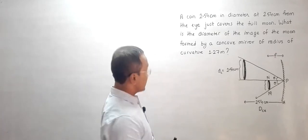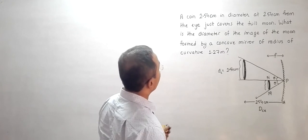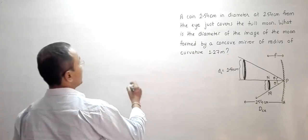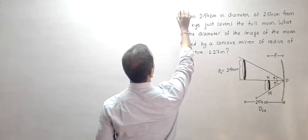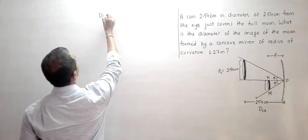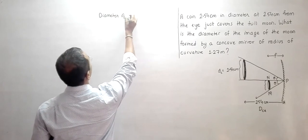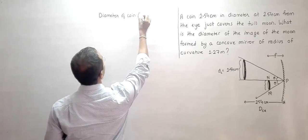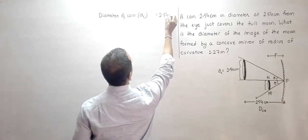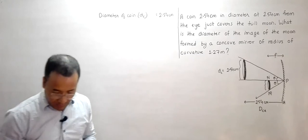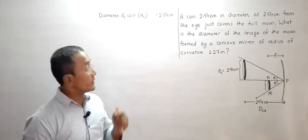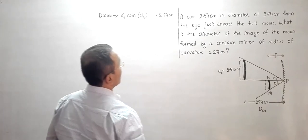Today's question involves a coin whose diameter is 2.54 centimeters. We write this as DC = 2.54 cm. It is actually one inch — in old books it was given as one inch, and once the SI system came into effect, they changed it to centimeters.